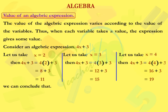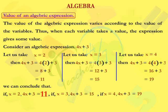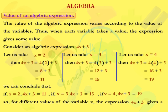We can conclude that if x is equal to 2, 4x plus 3 is equal to 11. If x is equal to 3, 4x plus 3 is equal to 15. If x is equal to 4, 4x plus 3 is equal to 19. So, for different values of the variable x, the expression 4x plus 3 gives a different value.